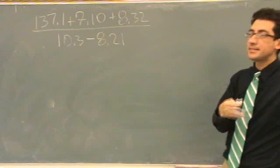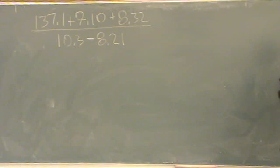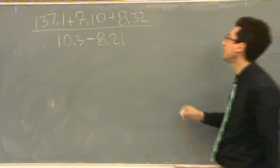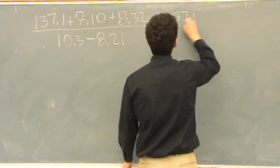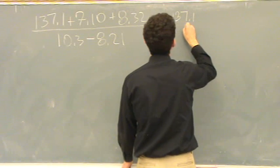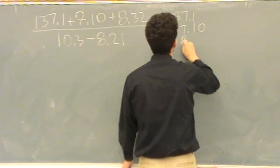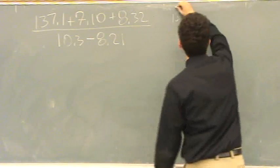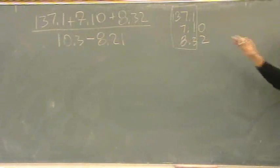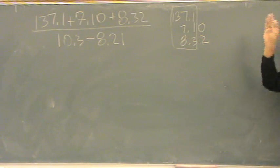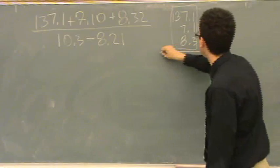You have to do each one separately, consider the sig figs, and then end with the correct number. So for the numerator, for example, when it's addition and subtraction, you line up all the decimals, and then you take the one with the least decimals after the decimal point. And that's your cutoff for sig figs.